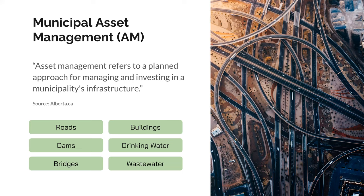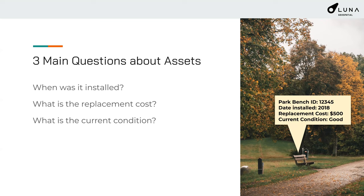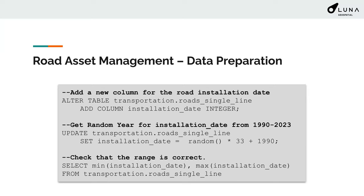For example: park bench ID 12345, installed date 2018, cost $500, condition: good. This is typically the information we're collecting and updating over time for all municipal assets. For this example I made up data — I don't have the actual installation year for all roads in London, so I used random values to create a year between 1990 and 2023. These data are simulated, so don't go back and say London has so many streets that are this old. I did this in PostGIS — I just ran a few SQL queries — using the random function to generate a number between 1990 and 2023.